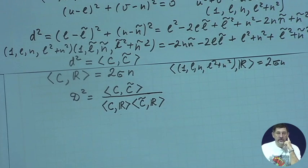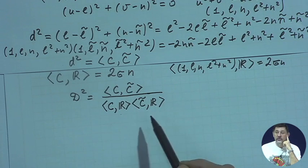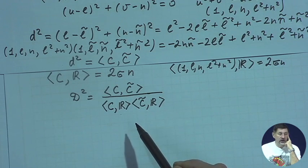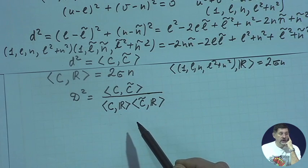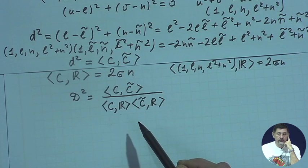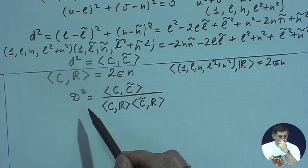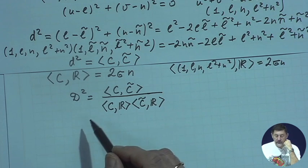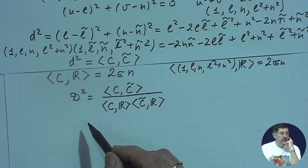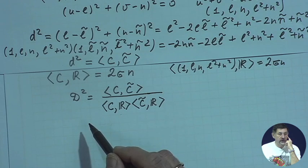You may notice that this expression contains only inner products of cycles, and the inner product of cycles is Möbius invariant. So that expression is Möbius invariant by the property of Möbius invariance of the inner product of cycles.